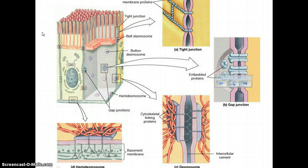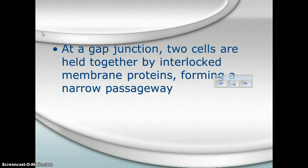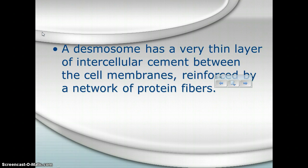Looking at the desmosome, in this case you have anchoring proteins going from one side of the cytoskeleton to another between cells. A desmosome is another way that cells are anchored from one cell to the next, helping to keep them more tightly joined together. To summarize: at a tight junction, the outer surfaces are bound tightly together — these are the strongest intercellular connections. At a gap junction, cells are held together by membrane proteins that form a narrow passageway. And a desmosome has a layer of cement between the cell membranes reinforced by protein fibers.